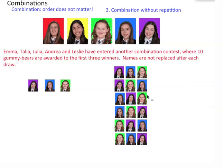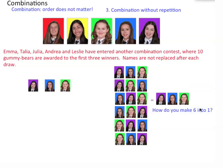But notice: how many ways can you pick three people? There are six different ways — it's three factorial ways. Since it doesn't matter whether it's Leslie, Andrea, Julia or any other order — it doesn't matter the order — what we want to do is take all these six different ways of writing it and reduce it to just one way. How do you take six and reduce it to one? Divide by six. So we're going to do the same thing.